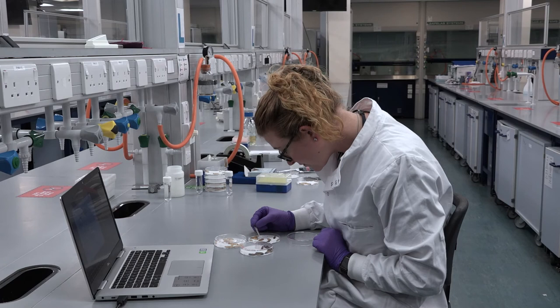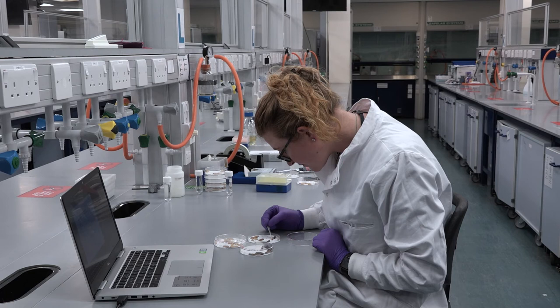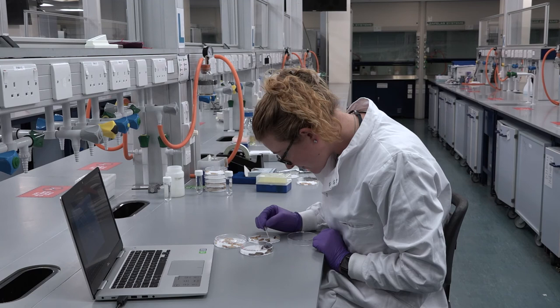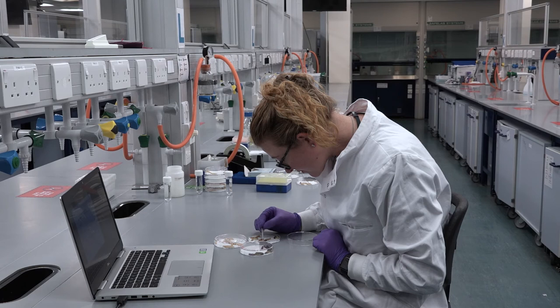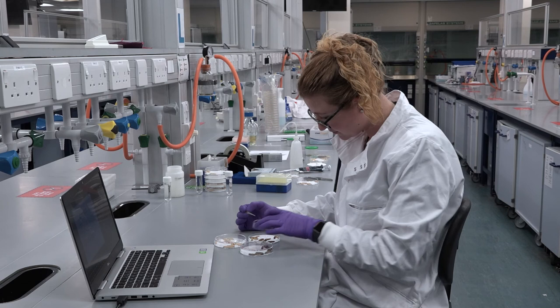In this experiment, larvae were co-injected with dexamethasone 21-phosphate disodium and Acinetobacter baumannii. The larvae were dosed with 200 micrograms of dexamethasone and allowed to rest for 10 minutes before injection with Acinetobacter baumannii. The larvae were then placed at 37 degrees and observed over a 72-hour time course.